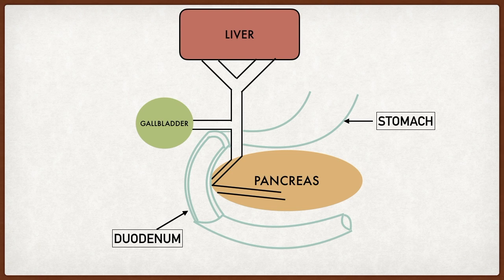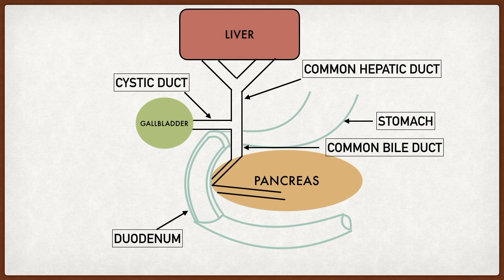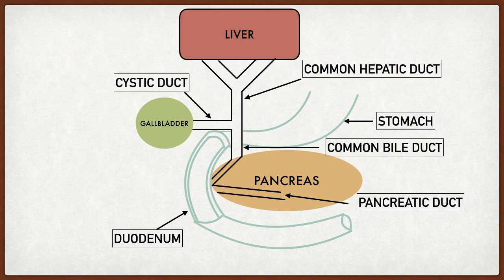Here's a simplified version of the anatomy we're going to be using for the rest of the video. You can see the liver up top and the gallbladder inferior to it. We have the stomach connecting to the duodenum, and the pancreas is shown. The right and left hepatic ducts come out of the liver to form the common hepatic duct. The cystic duct connects the gallbladder to the biliary system, and together with the common hepatic duct forms the common bile duct, which empties into the small intestine through the ampulla of Vater. There's also the pancreatic duct going through the pancreas.